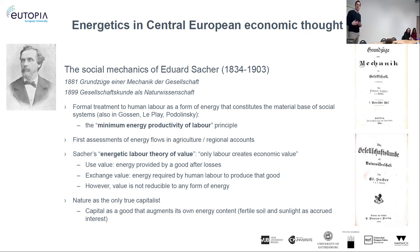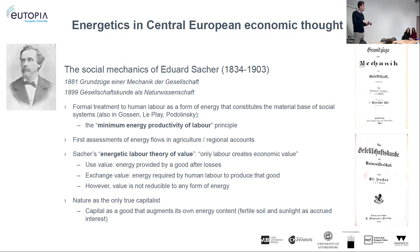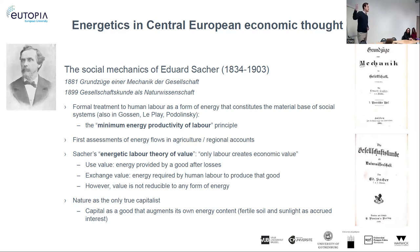This is called the minimum energy productivity of labor, also known as the Podolinsky Principle, because in 1881 a Ukrainian physician called Sergei Podolinsky arrived at the same theories and conclusions. Podolinsky was working with French official agricultural statistics to calculate flows of energy into crops and across sectors of the economy. Zaha was doing the same for the Habsburg Empire.